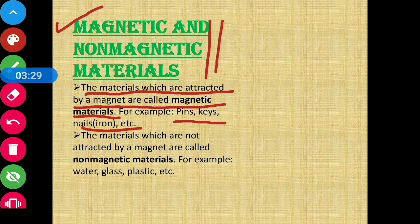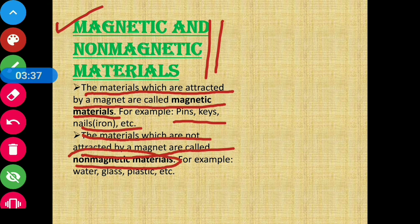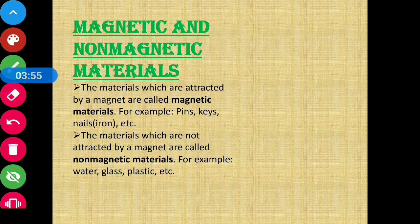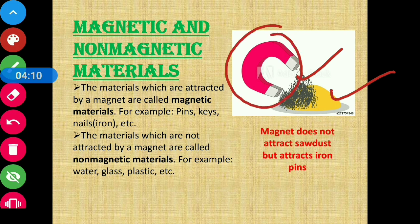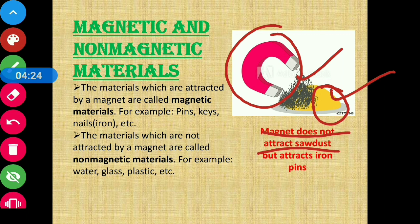The materials which are not attracted by a magnet are called non-magnetic materials. Examples include water, glass, and plastics. For instance, in a mixture of sawdust and iron pins, when we bring a magnet near, it will only attract the iron pins. The magnet does not attract the sawdust. This shows the property of magnetic and non-magnetic materials.